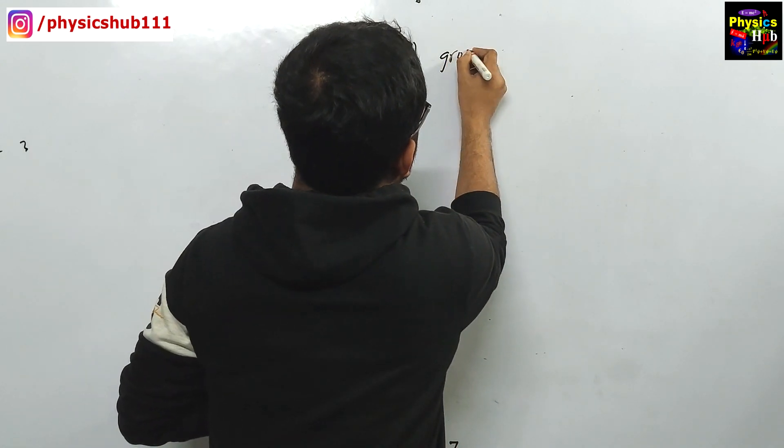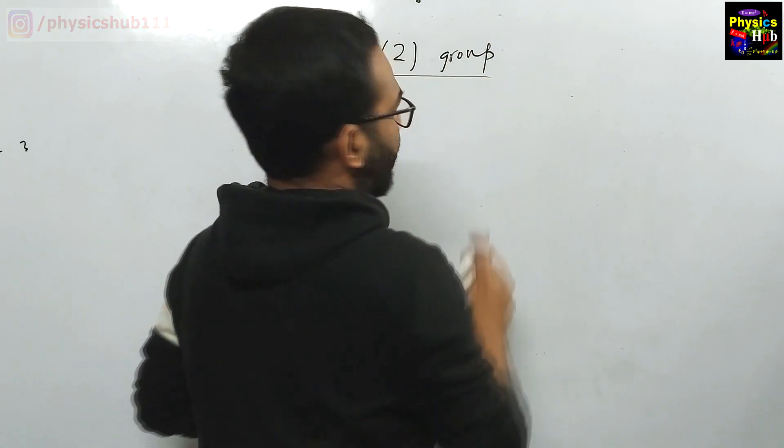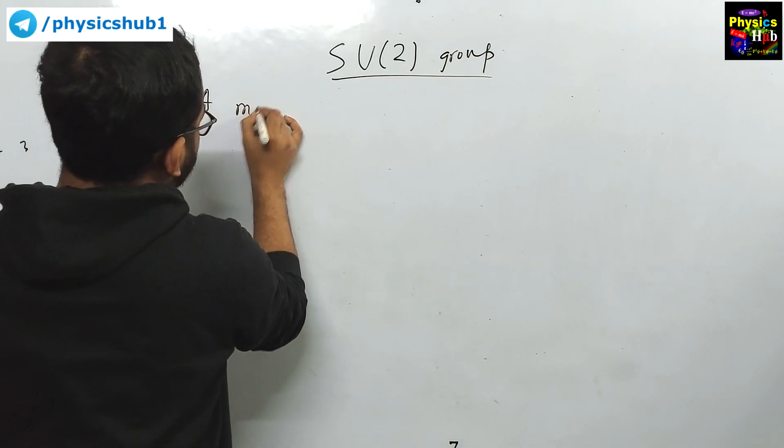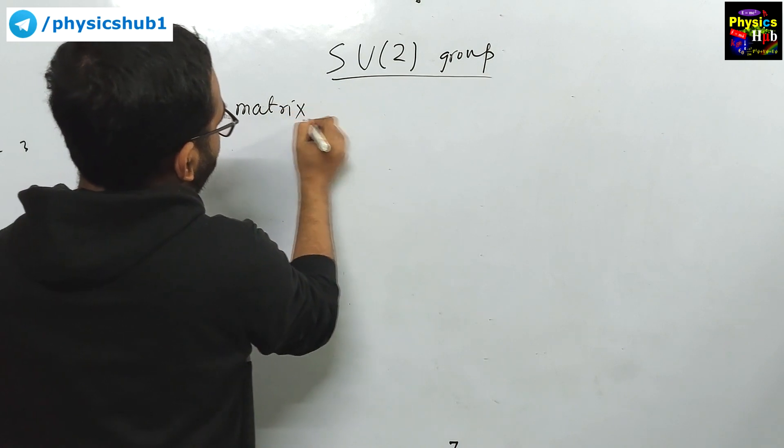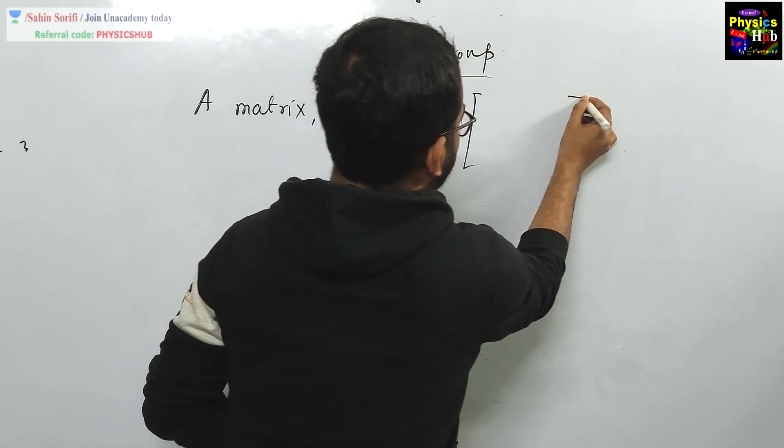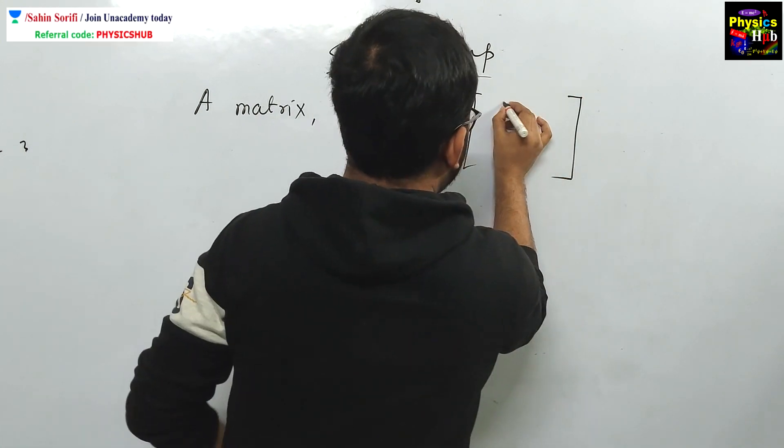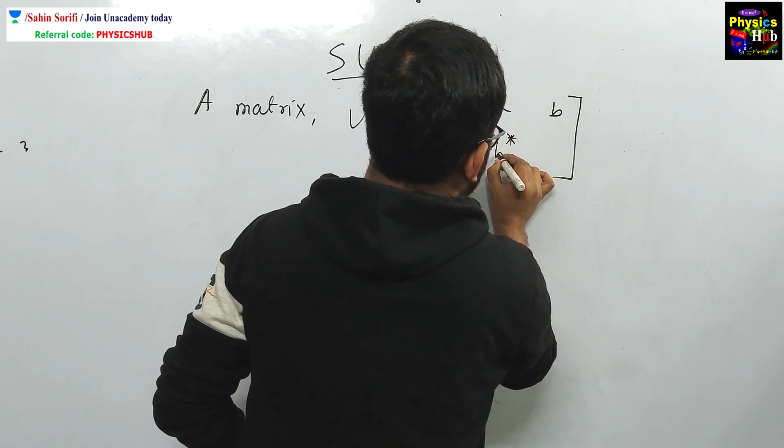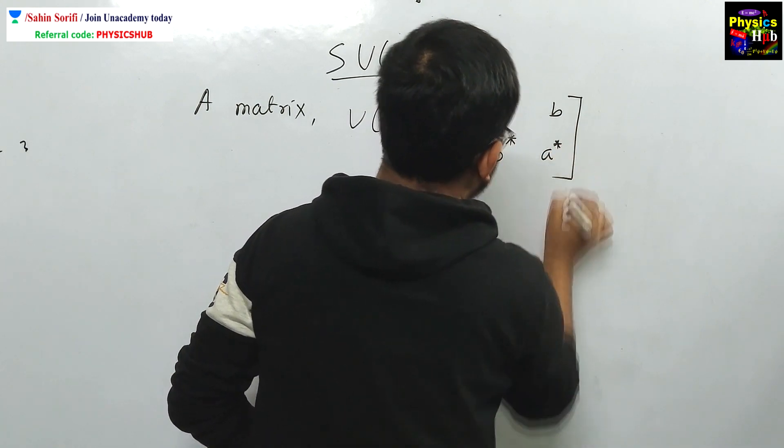So let me just give you one line about this SU(2) group. If you have a matrix, let us say U, which has these elements A, B and it is written in this way A, B, minus B star and plus A star.